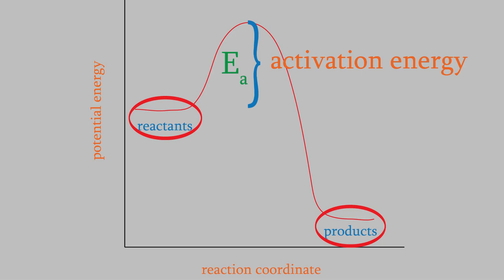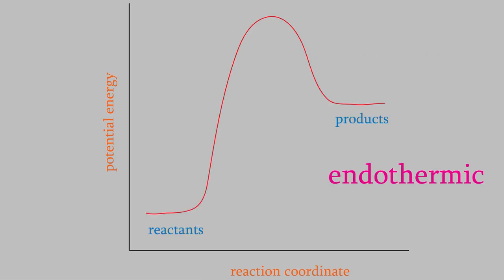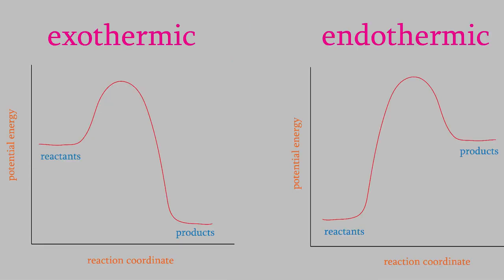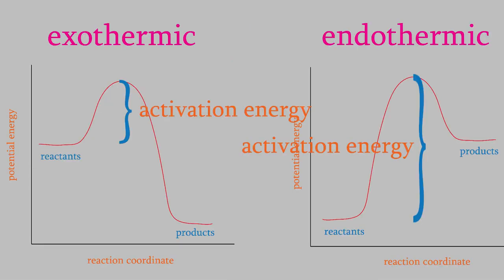You might remember from the General Chemistry 1 course that when the molecules lose energy during a reaction, we say that the reaction is exothermic. So, what would this curve look like if the reaction were endothermic? In that case, the products would have a higher potential energy than the reactants, like this. Notice that in both cases, there's still an activation energy barrier that the reactants need to overcome in order to make the reaction happen.